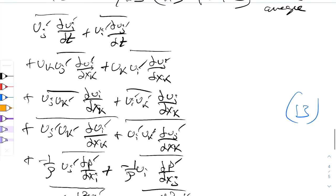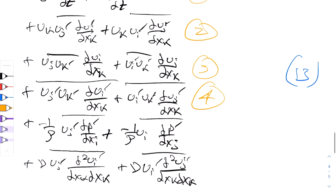I'll label the terms in equation 13 one by one: term 1, term 2, term 3, term 4, term 5, and term 6. Now let's talk about what they physically mean, which will be very interesting. There's a lot of discussion in the community about what they mean and it's very important to understand them.